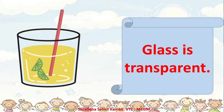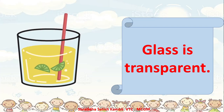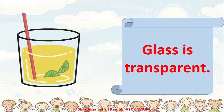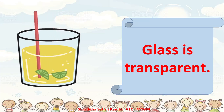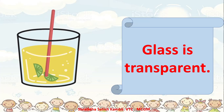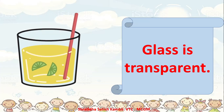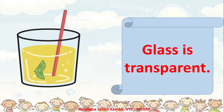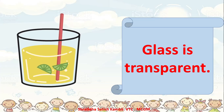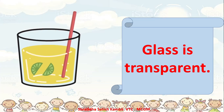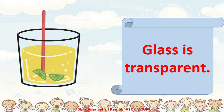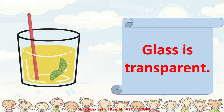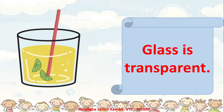Now we come to the next property or next quality of glass. Glass is transparent. Transparent means - look, there is a glass over here and there are pieces of lemon in it and you are using a red straw and stirring the lemon juice. Now, I am looking from outside. Can you see the pieces of lemon moving around inside the glass? Can you see the straw moving around inside the glass? Of course we can see it. Why? Because this particular tumbler is made up of glass.